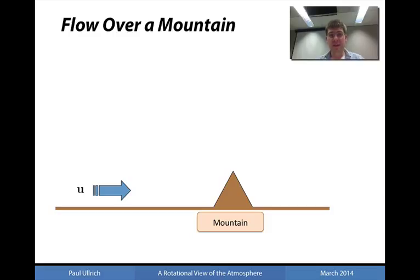Consider a very simplified scenario. We have a mountain which exists on the earth's surface and we have an impinging flow which is purely zonal and heading in the eastward direction — that is, a westerly flow — towards the mountain.